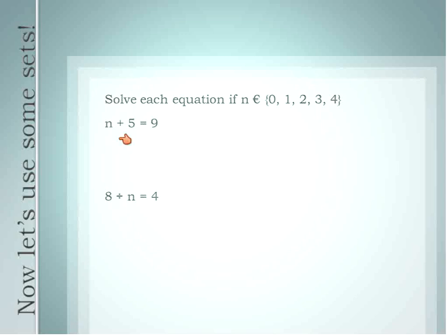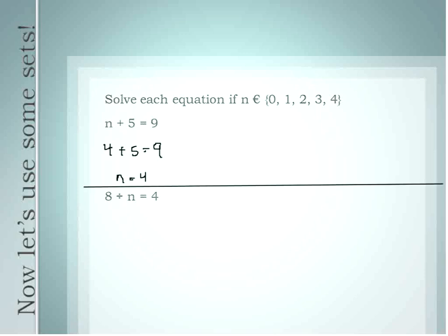Let's go ahead and review. We just did n plus 5 equals 9 — 4 plus 5 is equal to 9, so n in this case is equal to 4. Now we're going to move on to a second equation. Using the same process, we're going to substitute values from the set, starting with 0, into this next equation.